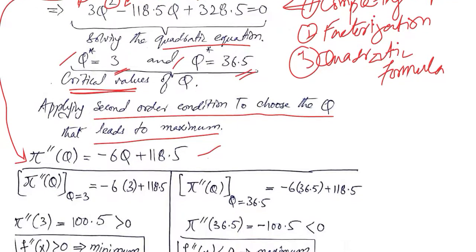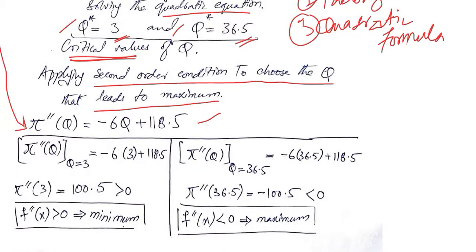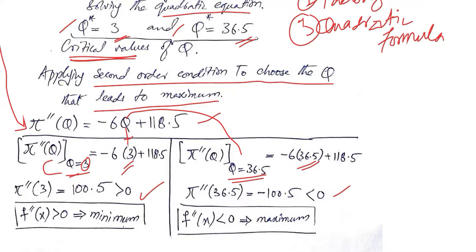We now put the values one by one: q* = 3 and q* = 36.5. In place of q we write 3 for the first case, and 36.5 for the second. After substituting 3 and 36.5 respectively, we get two results. For q = 3, the second order derivative is positive, which means we get a minimum. For q = 36.5, the second order derivative is negative, which means we get a maximum.